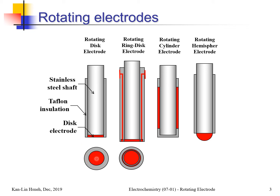Because the electrode rotates, the flow acts like a centrifugal pump — flow comes from the y-z direction and goes to the x direction. By controlling the rotating speed, you control the mass transfer rate. The second type is the rotating ring-disk electrode.